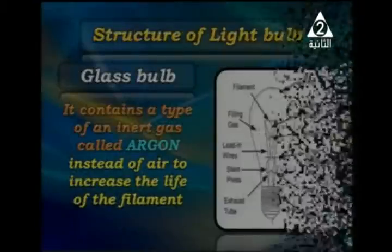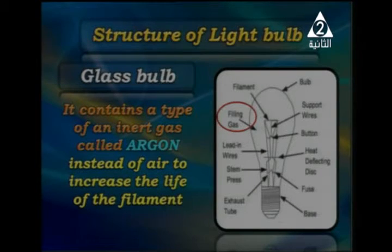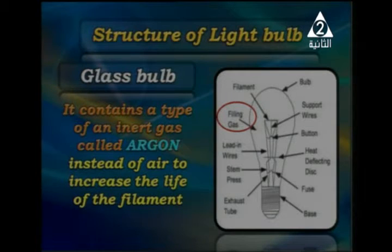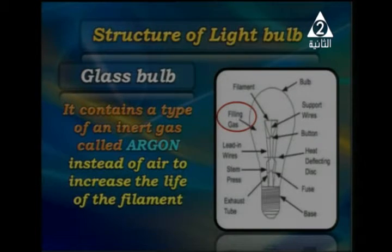The glass bulb also contains argon gas instead of air, in order to increase the life of the filament. Argon is an inert gas — a very lazy gas — that does not make any reaction. It keeps the light bulb working for a long time without damage.